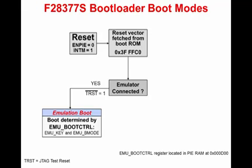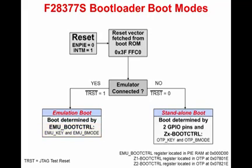In emulation boot mode, the boot is determined by the EMU_boot control register located in the PIE RAM. Specific details about the boot flow are then determined by the EMU_key and EMU_BMODE fields in the EMU_boot control register. If the emulator is not connected, the boot process follows the stand-alone boot mode flow. In stand-alone boot mode, the boot is determined by two GPIO pins and the Z1 and Z2 boot control register located in the OTP. Specific details are then determined by the OTP_key and OTP_BMODE fields in the Z1 and Z2 boot control register.